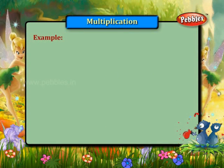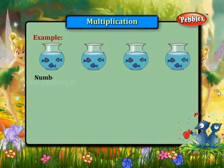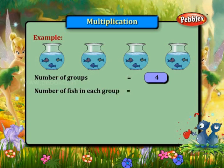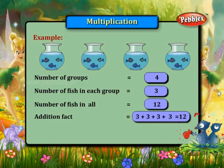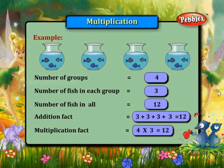Let us see an example. The number of groups is equal to four. The number of fish in each group is equal to three. The number of fish in all is equal to twelve. The addition fact is three plus three plus three plus three equals twelve. The multiplication fact is four into three equals twelve.